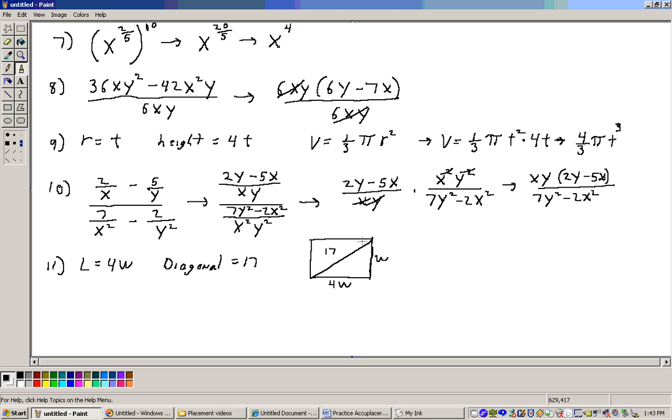Now to tie this stuff together, we can use the Pythagorean theorem that this side squared plus this side squared equals this side squared. So that'd be w squared plus 4w, that quantity squared, equals 17 squared. w squared is w squared. 4w squared would be 16w squared, and that equals 17 squared. 1w squared plus 16w squared is 17w squared, equals 17 squared.